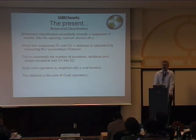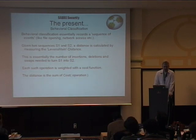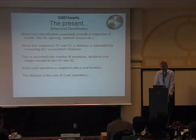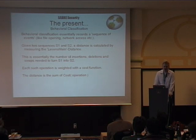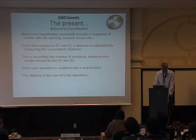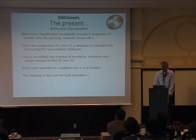Something very popular these days is behavioral classification. It works by executing the malware in a sandbox, recording events as they occur, and ordering these events into a sequence. When you have a sequence of events, you can calculate the distance between two sequences using the Levenshtein distance — how many insertions and swaps you need to transform one sequence into another. You weigh the events with different weights, sum it up, and get some sort of distance.